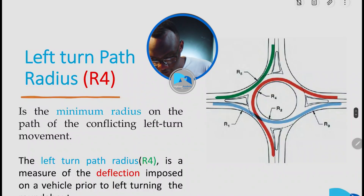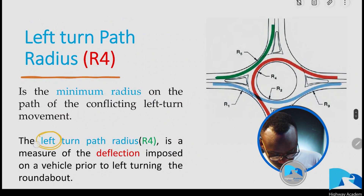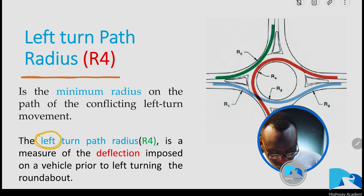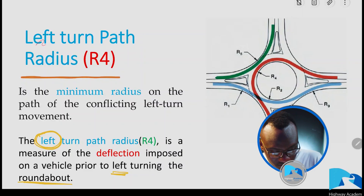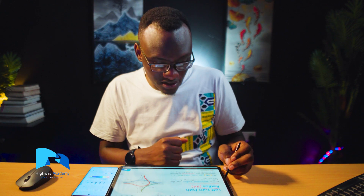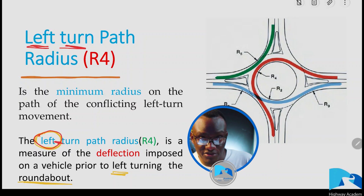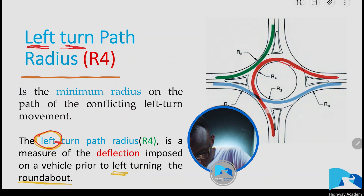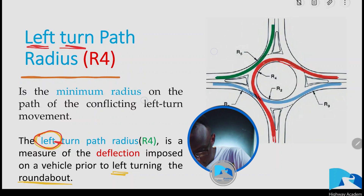The left turn, which is R4, is just a measure of the deflection imposed by a vehicle prior to left turning at the roundabout. Looking at the left turning path radius, assuming you're driving on the right-hand side, R4 is referred to as the left turn path radius — it's the path taken when you come in and left turn at the roundabout, highlighted here as you've seen.